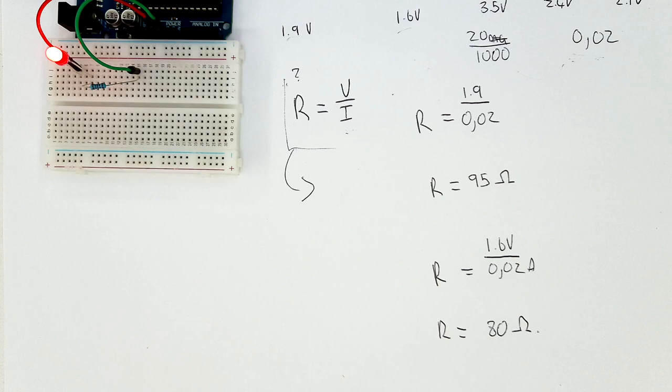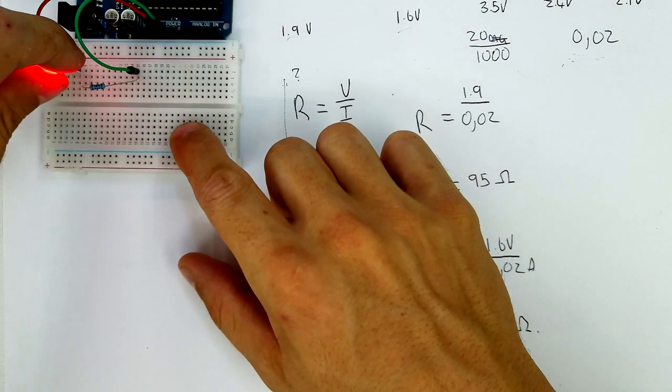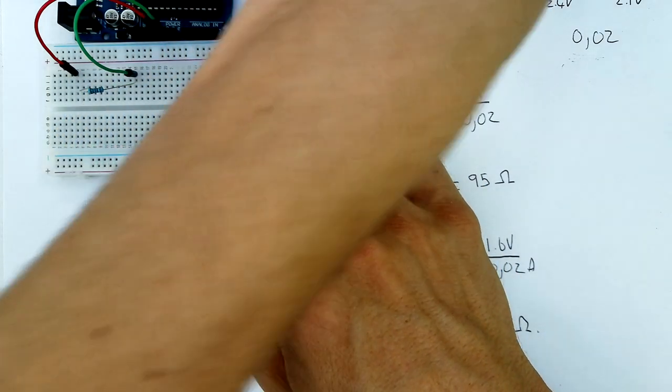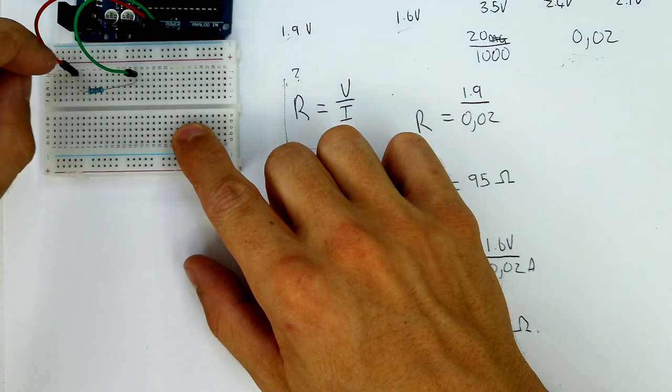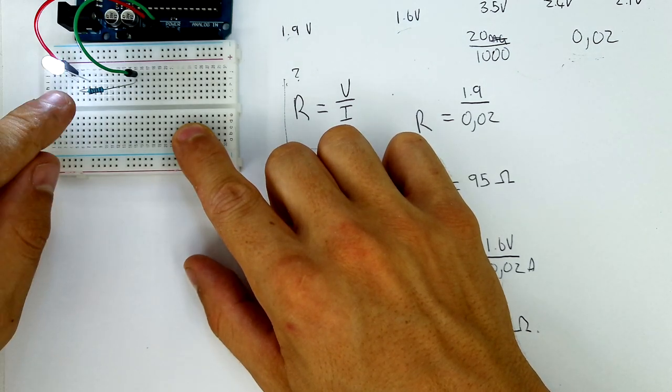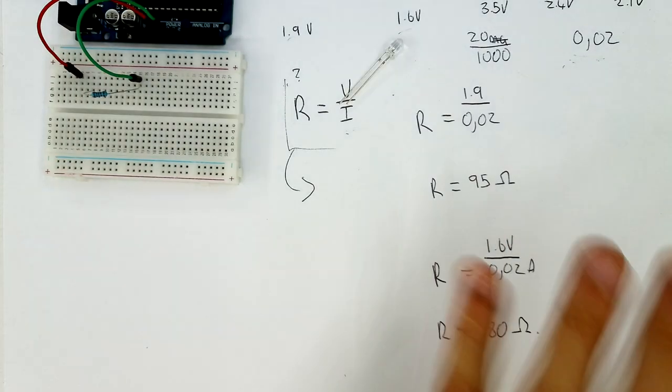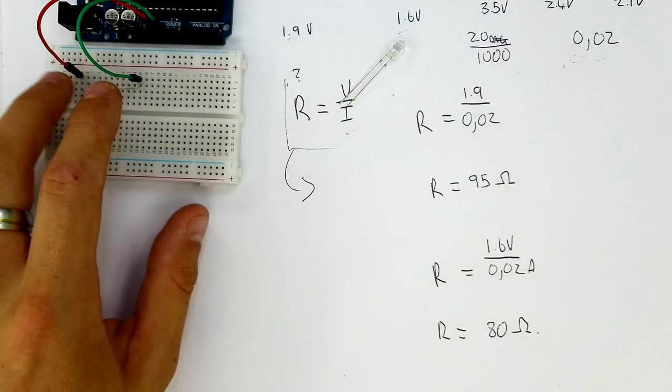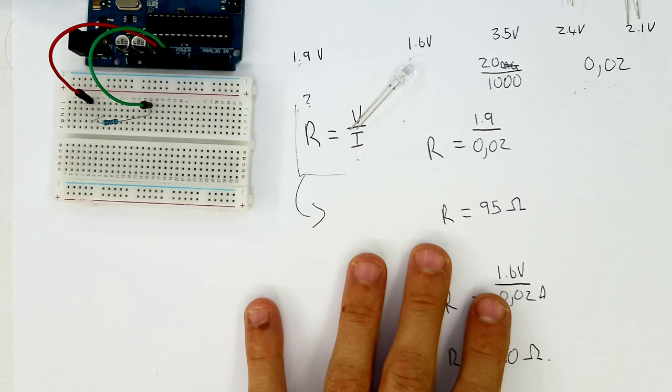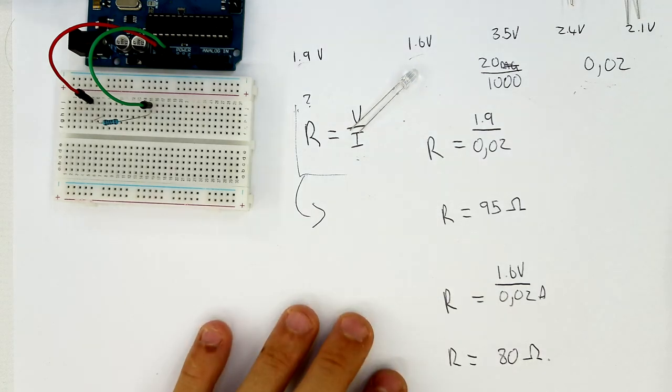And there we go, all of our LEDs should turn on on this voltage and on the current that we are running them on. So there we go, all of them are working perfectly. So this is how you can calculate LED resistor values with a bit of mathematics.